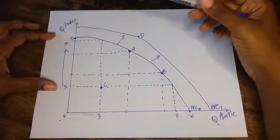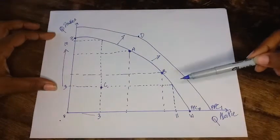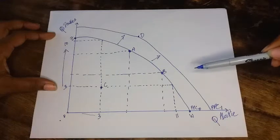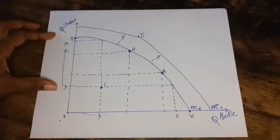So what could cause an outward shift of our PPC curve from PPC0 to PPC1? It means that something would have had to happen with our resources. Meaning we would have either had an increase in resources or an increase in technology.